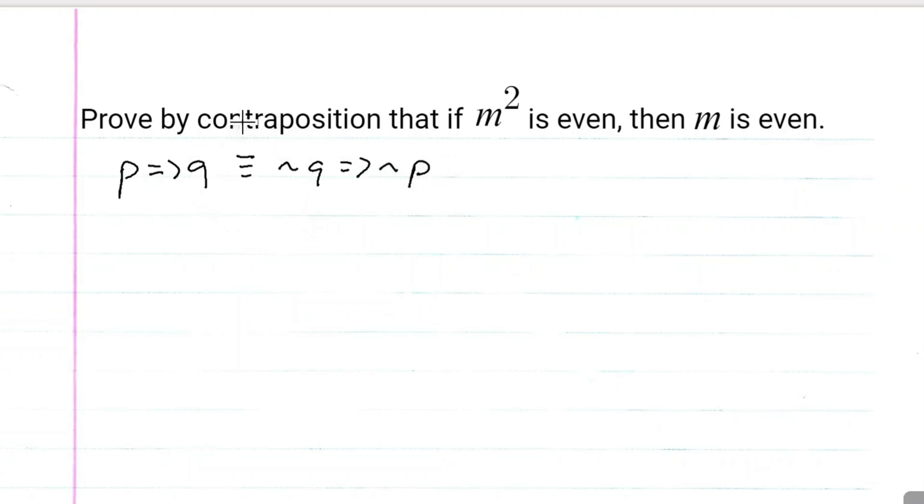What this tells us is if not q implies not p is true, then p implies q is true. So how we can use that in this context is if m is odd, then m squared is odd.